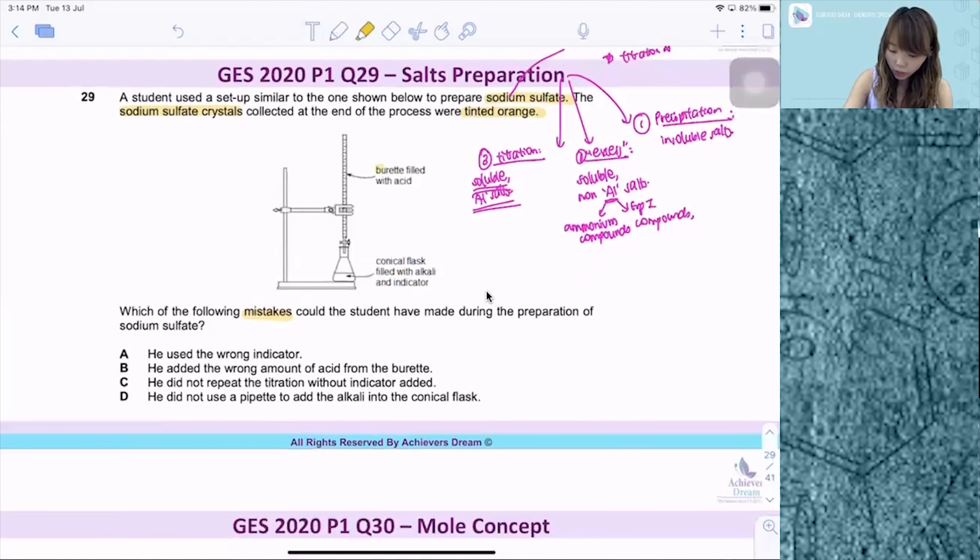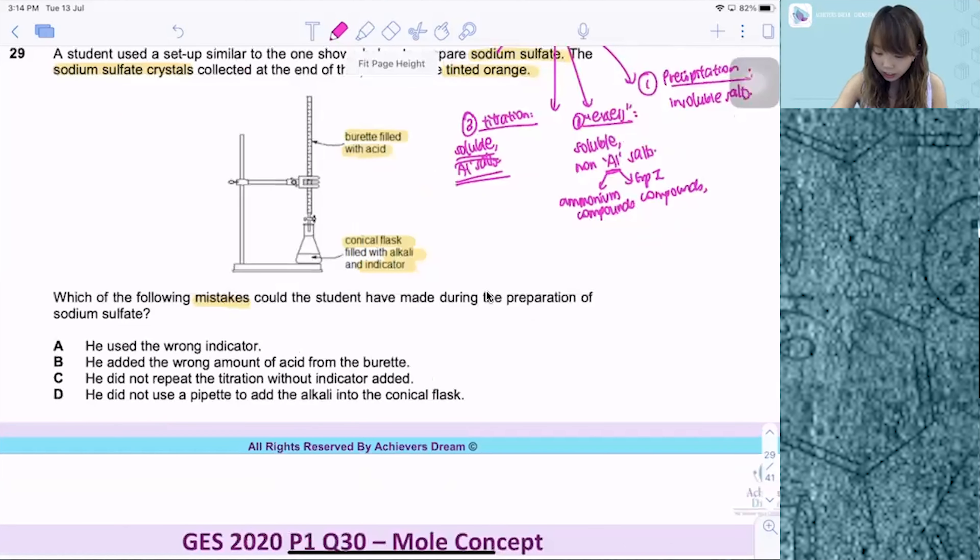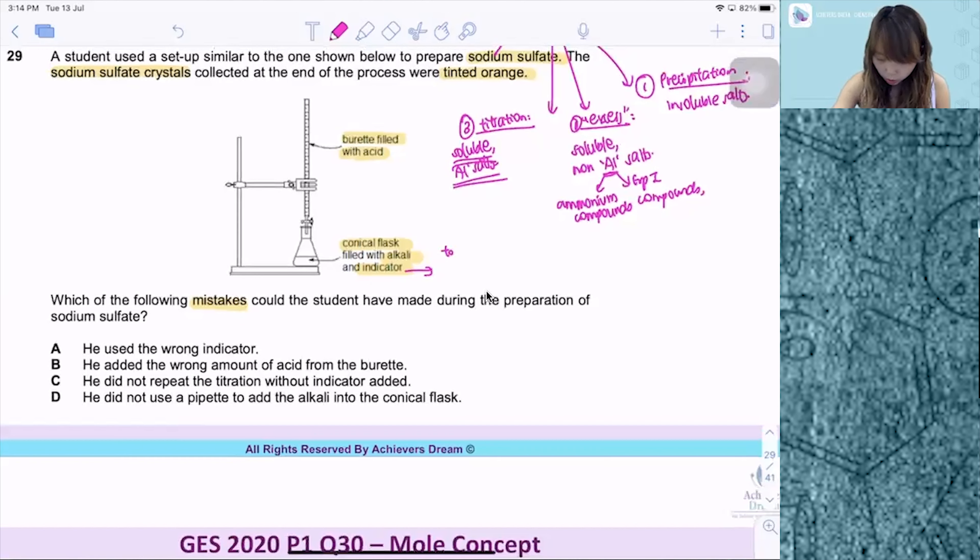So over here, you have your acid inside your burette and you have your conical flask filled with alkali and the indicator. What is the purpose of adding in the indicator? It is to know when is the endpoint, to indicate endpoint when neutralization occurs. How do we tell this endpoint is reached by a sharp, distinct color change?